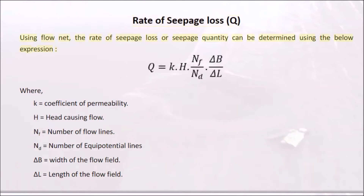Using a flow net, the rate of seepage loss Q can be determined using the expression: Q = k × h × (Nf / Nd) × (b / l), where k is the coefficient of permeability, h is the head causing flow, Nf is the number of flow lines, Nd is the number of equipotential lines, b is the width of the flow field, and l is the length of the flow field.